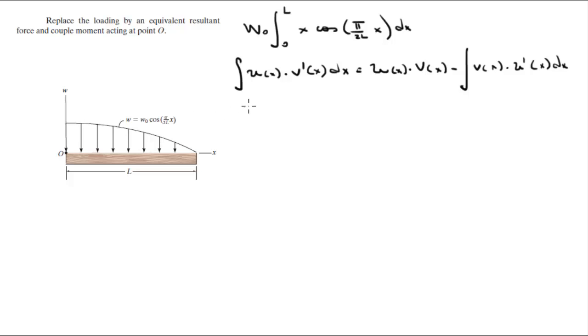So what's U and what's V? U of X is gonna be X. U prime of X, which will be the derivative of X, would be 1. V of X would be 2L over pi sine of pi over 2L X. And V prime of X is equal to cosine of pi over 2L X. So you're basically gonna replace these by U of X times V prime of X.